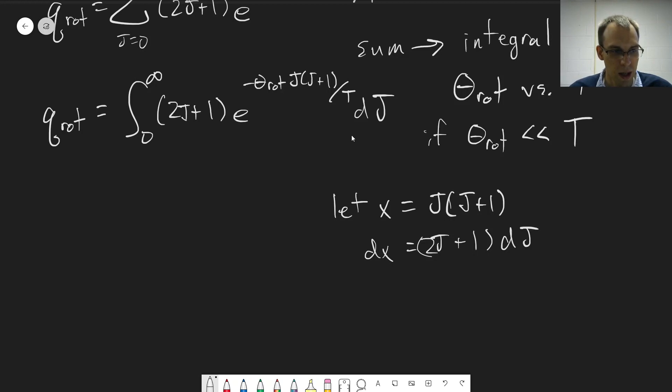So then we get our integral becomes integral from 0 to infinity. We have our 2j plus 1 times dj, so that's dx, e to the minus theta rot x over T times dx, right? Because these two become dx. All right, and so this integral is a known integral, the integral of an exponential raised to a constant times x.